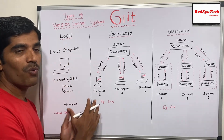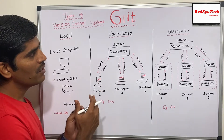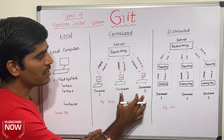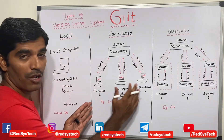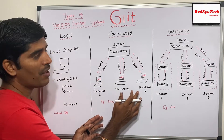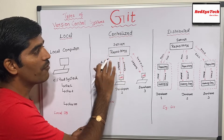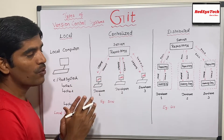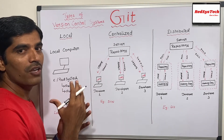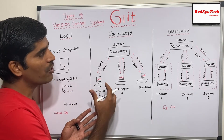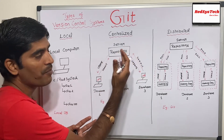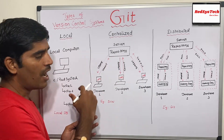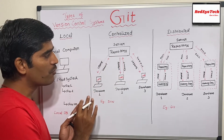Now let's talk about the centralized version control system. Here you have developer 1, developer 2, and developer 3 — it's not about one machine, it's about team collaboration. There is a server where your code is stored. Let's say there is a project with thousands of files stored as a repository on that server. Each developer can get that entire set of files to their local machine, make changes, and commit back to the repository.